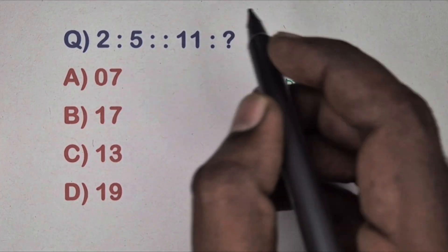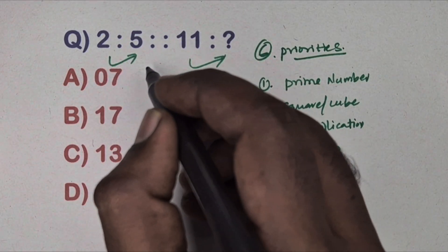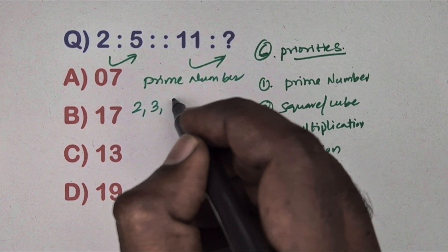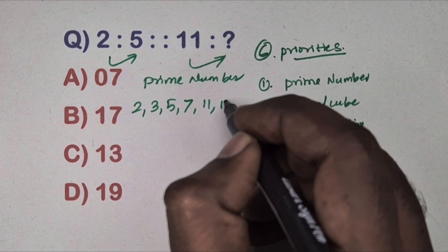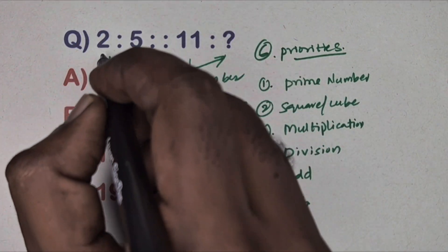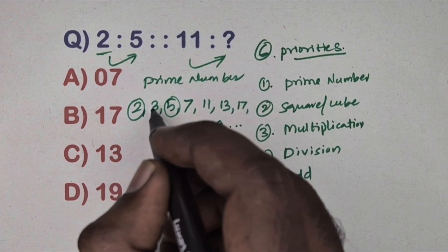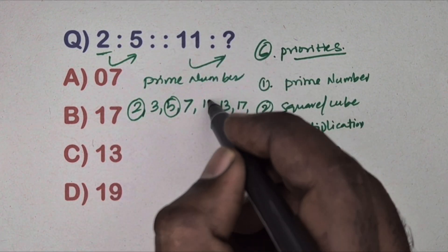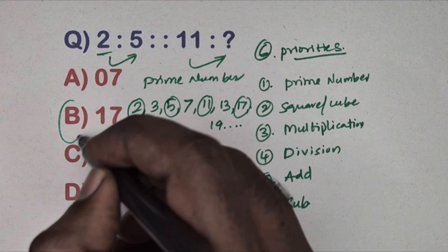Let's solve the questions. Two is related to five, so eleven is related to which number? Options are given. The given numbers are prime numbers: two, three, five, seven, eleven, thirteen, seventeen, nineteen and so on. The relation between two and five is alternate prime numbers — skip three, next is five. Same way, after eleven skip thirteen, so the answer is seventeen. Option B is the correct answer.